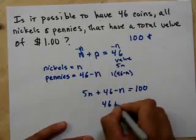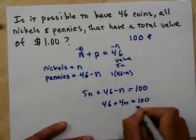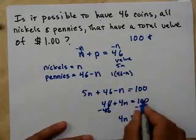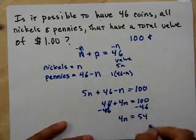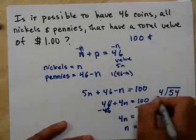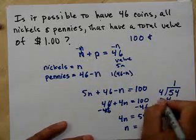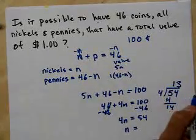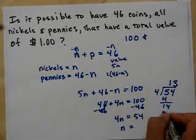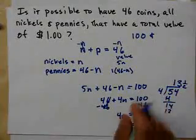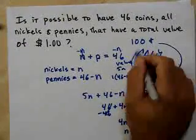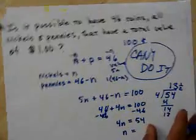5n minus n, I get 46 plus 4n equals 100. Subtract 46 from both sides. I get 4n equals what? 100 minus 46 is 54, right? n equals how many 4s go into 54? This is looking good right now. 1 goes into 5, right? 4 goes into 14. What? This is, no, there's no way. I can't. There's no way, right? I can't have 13 and 1 half nickels. Ah, can't do it. No way, no matter how you try. Not with just 46 exact coins exactly.